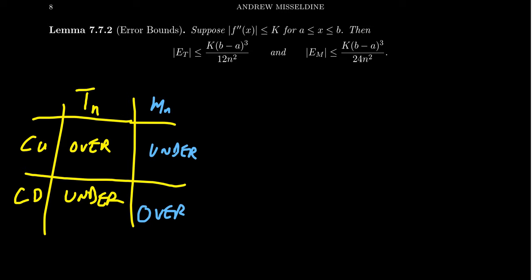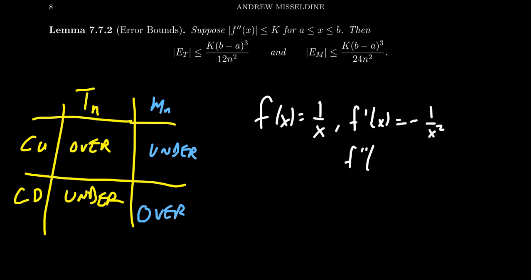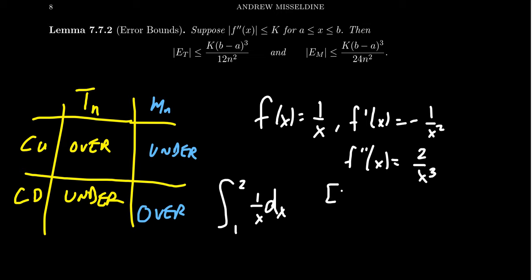Applying this to our previous example: we were looking at f(x) = 1/x, with the integral from 1 to 2 of 1/x dx. The first derivative is −1/x², and the second derivative, by the power rule, is 2/x³. We need to find a bound k for this second derivative on [1, 2]. Note that 2/x³ is a decreasing function on the interval 1 to 2.